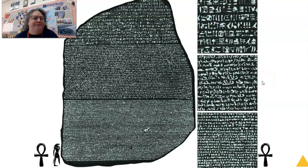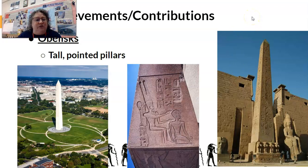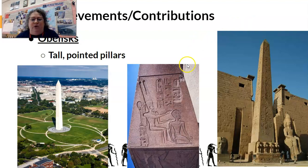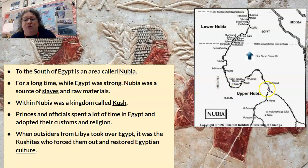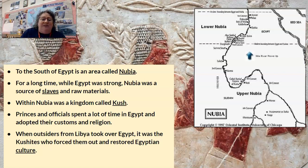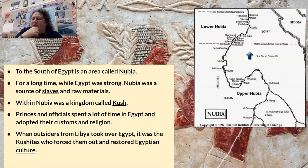In terms of building contributions, obelisks are also famous — tall stone pillars like the Washington Monument, which is modeled after them to show achievement. The Egyptians developed systems of measurement, a solar calendar, medicine, and geometry — they were very advanced. There's one other civilization to mention: Nubia, to the south of Egypt. The Nubians were a source of slaves and raw materials; there was a period where they actually conquered the Egyptians briefly, but Egypt quickly regained control. The Nubians are an interesting people within the broader Egyptian kingdom.